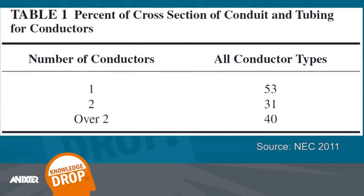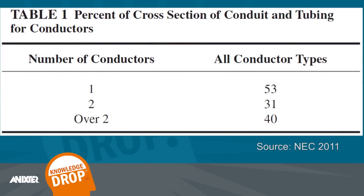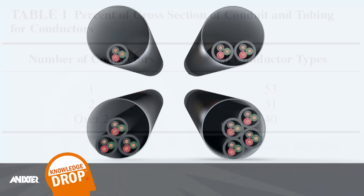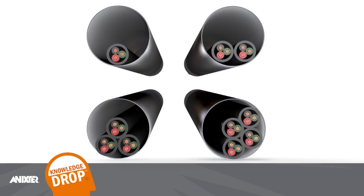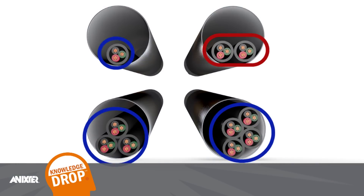NEC 2011 Chapter 9 Table 1 shows the maximum conduit allowance. As you can see, two conductors has the smallest maximum fill. Looking back at the diagram, this is due to the two conductors or cables forming an oval rather than a circle.